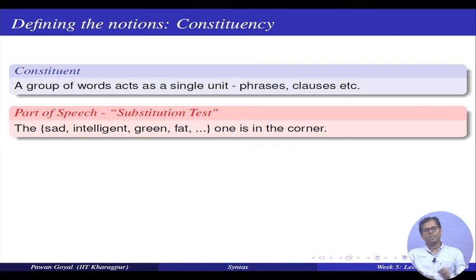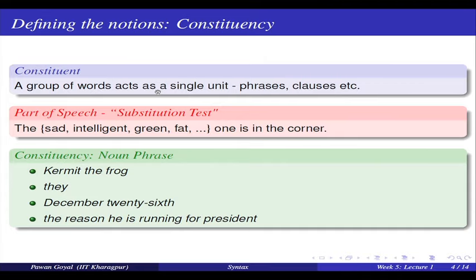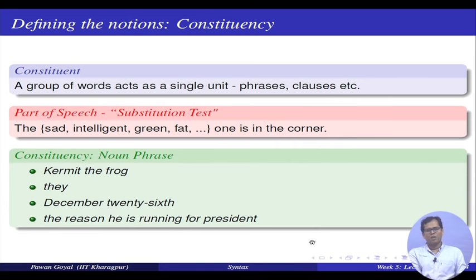In part of speech, we could do a substitution test. I have the sentence 'the blank one in the room', and I can fill in any adjective: the green one, the fat one, the intelligent one, the sad one. I can fill in any word that belongs to that particular part of speech category. Here it will be a particular constituent — a particular group of words that can behave similarly. For example, 'Kermit the frog', 'they', 'December 26th', 'the reason he is running for president' — all these are noun phrases and they can occur in a given context. For the substitution test, you can substitute any of these four noun phrases in a very similar context.